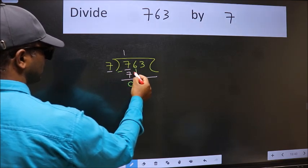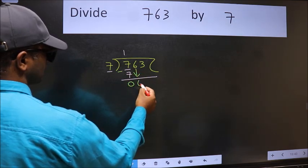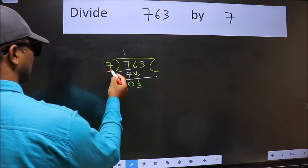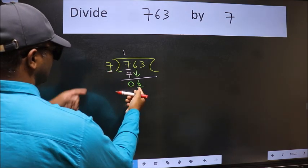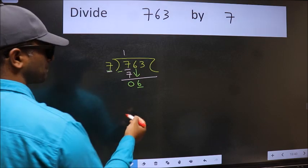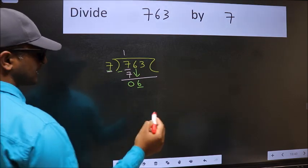After this, bring down the beside number. So 6 down. Now here we have 6 and here 7. 6 is smaller than 7. So we should bring down the second number.